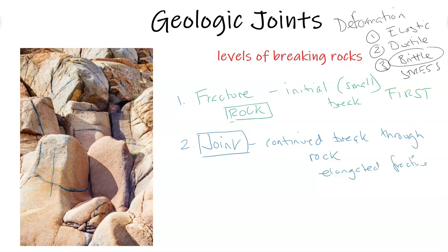If a joint continues and adds multiple joints together, then we call this a joint set. That's the next level, it's larger and larger. The rocks are getting more and more unstable based on the amount of joints there are in it.